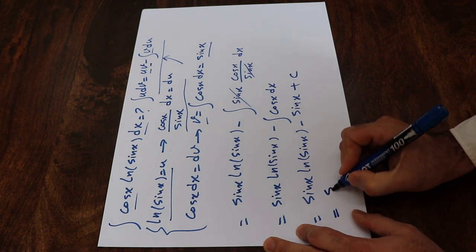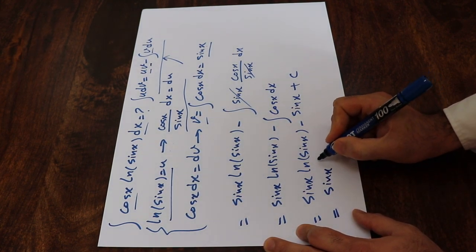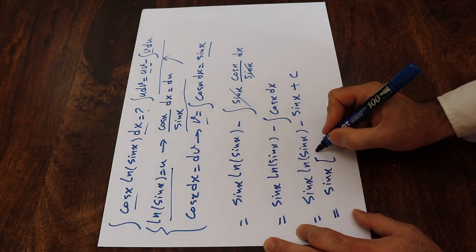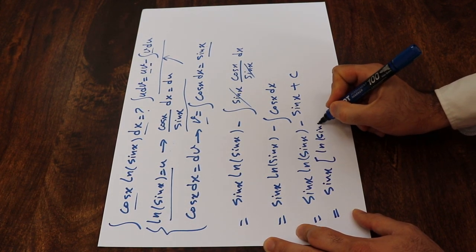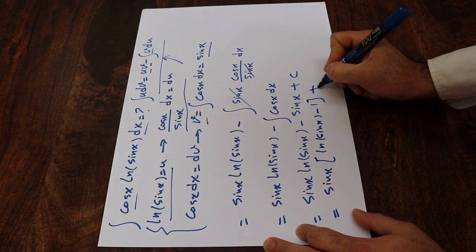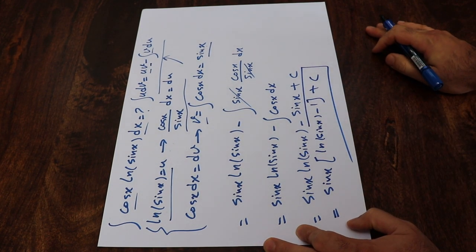You can also represent it by factoring out sine x. Therefore, that will be equal to sine x times ln sine x minus 1 plus c. And that's the solution to this integral.